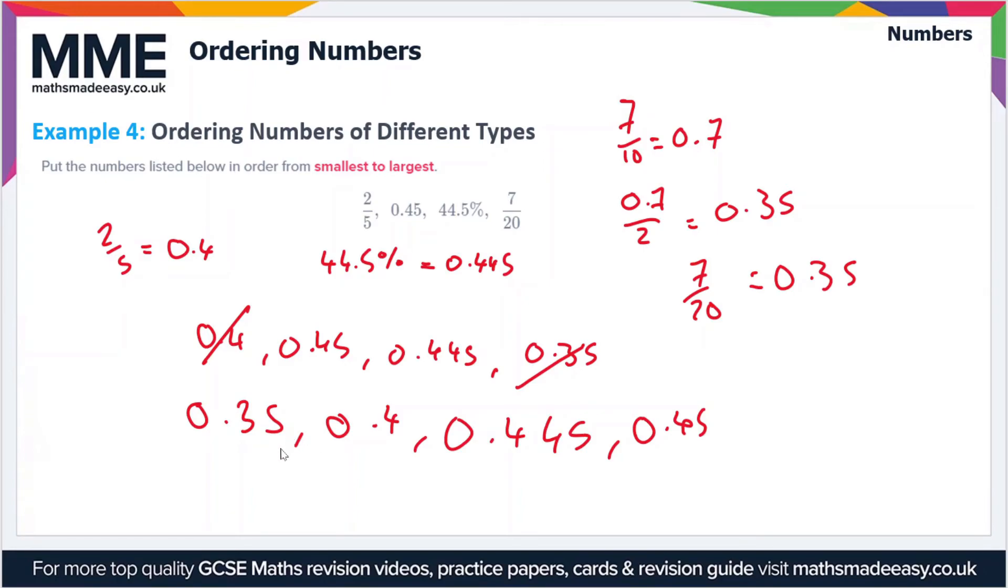All that's left is to put these back into our original forms. This was 7/20, and 0.4 is 2/5, 0.445 was 44.5%, and 0.45 was just given as 0.45. So these are all now in ascending order.